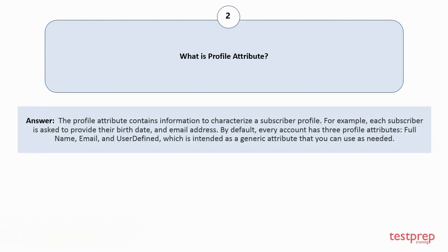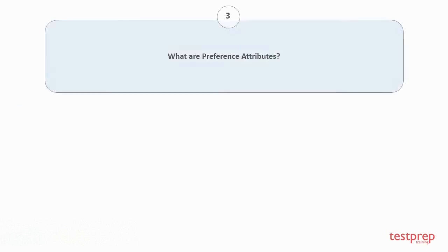Question number two: What is a profile attribute? The profile attribute contains information to characterize a subscriber profile. For example, each subscriber is asked to provide their birth date and email address. By default, every account has three profile attributes: name, email, and user-defined, which is intended as a generic attribute that you can use as needed.